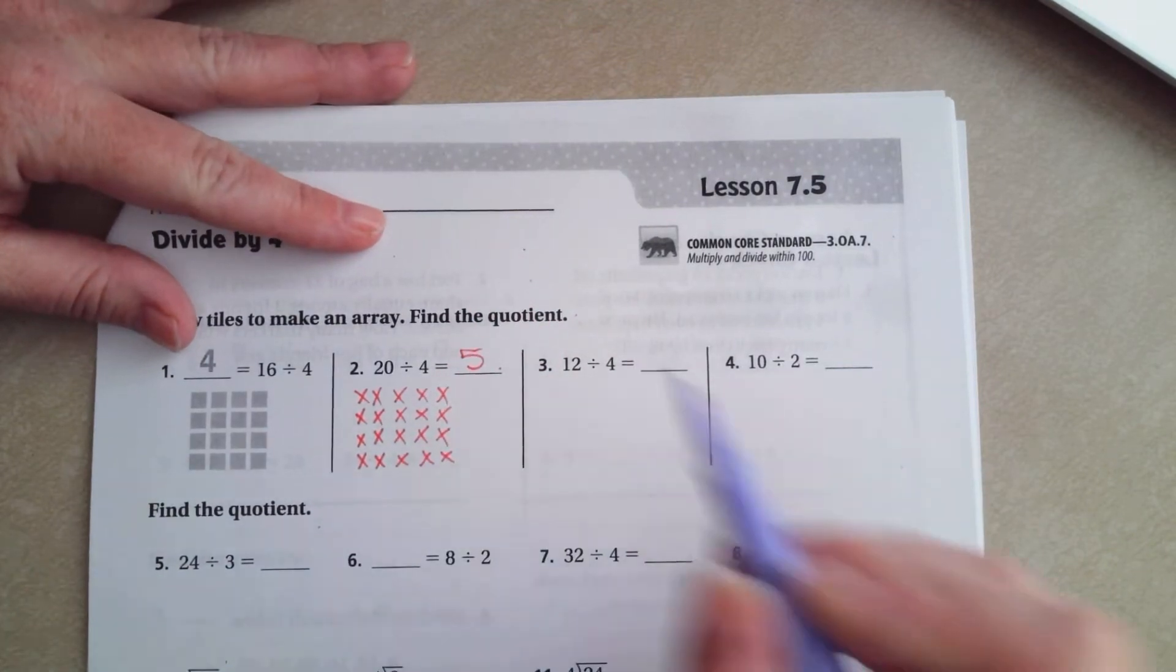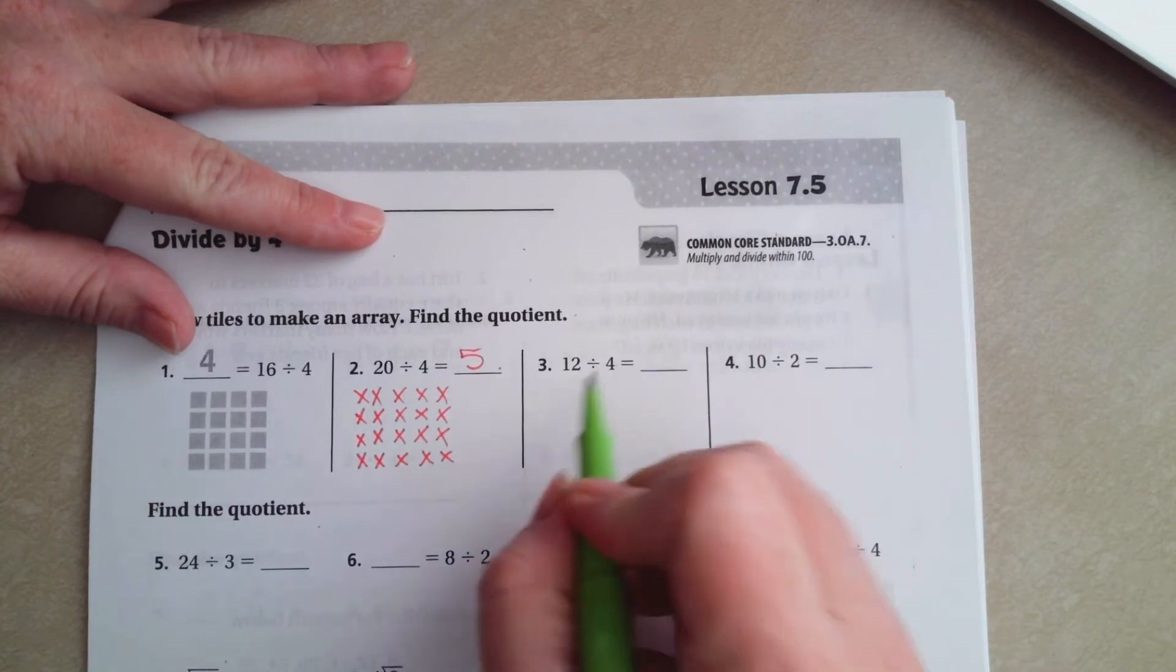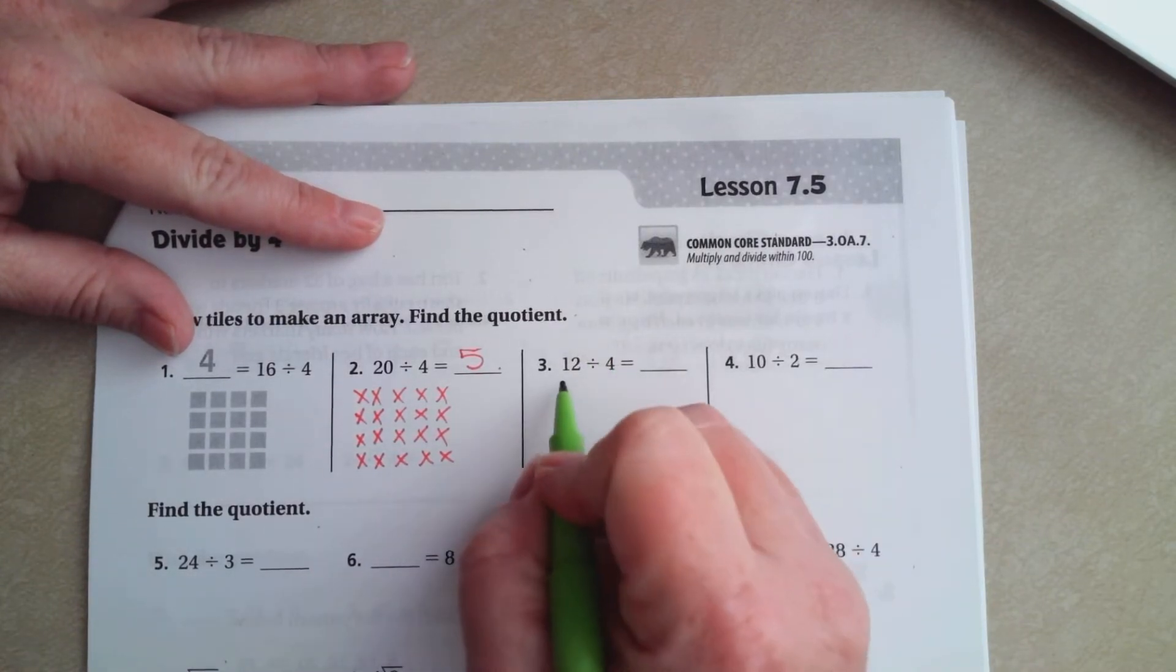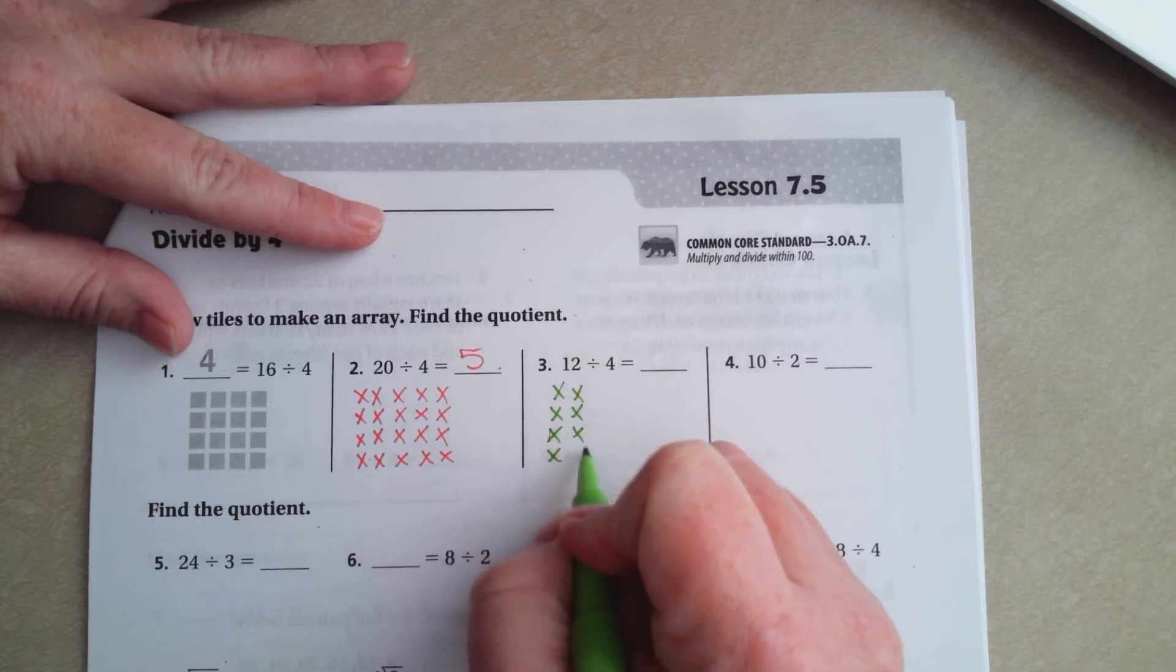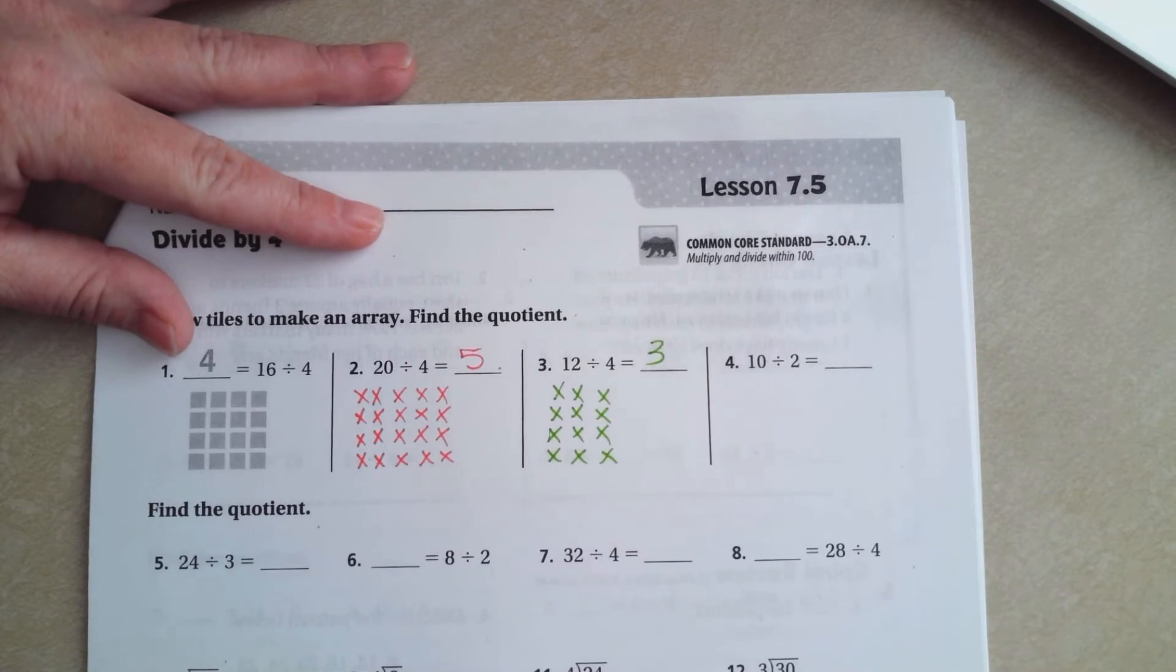I'm going to do the same thing right here. Rows of 4 until I get to 12: 1, 2, 3, 4, 5, 6, 7, 8, 9, 10, 11, 12. How many rows? 3.